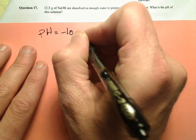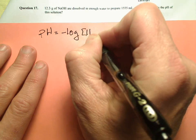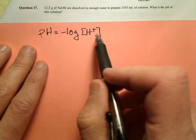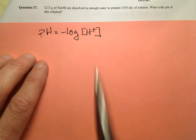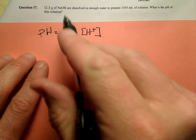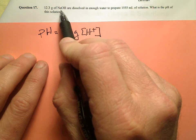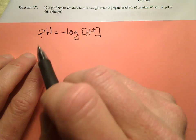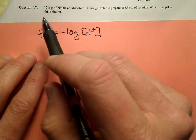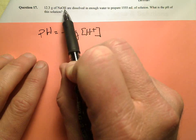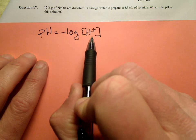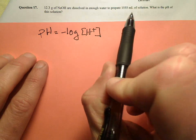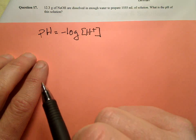Remember, pH is equal to the negative log of the hydrogen ion concentration. In order to figure out the pH, we need to know what the hydrogen ion concentration is. Well, this isn't an acid — this is a base, sodium hydroxide. So we're going to have to do this in a convoluted way. First, we're going to figure out the hydroxide ion concentration, then the hydrogen ion concentration, so that we can figure out the pH.